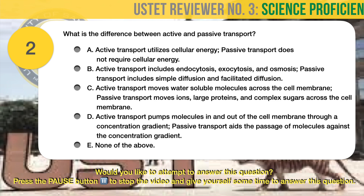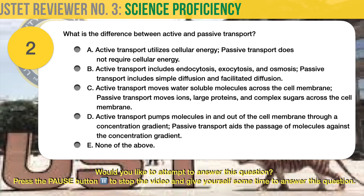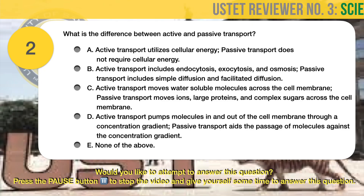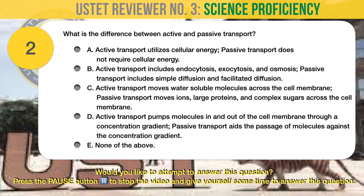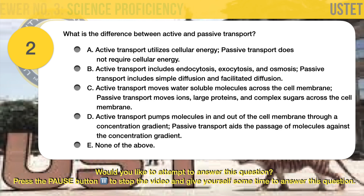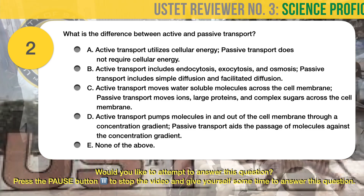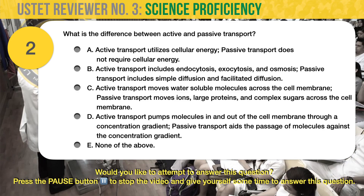Question number 2. Biology. What is the difference between active and passive transport? A. Active transport utilizes cellular energy. Passive transport does not require cellular energy. B. Active transport includes endocytosis, exocytosis, and osmosis. Passive transport includes simple diffusion and facilitated diffusion. C. Active transport moves water-soluble molecules across the cell membrane. Passive transport moves ions, large proteins, and complex sugars across the cell membrane. D. Active transport pumps molecules in and out of the cell membrane through a concentration gradient. Passive transport aids the passage of molecules against the concentration gradient. E. None of the above.